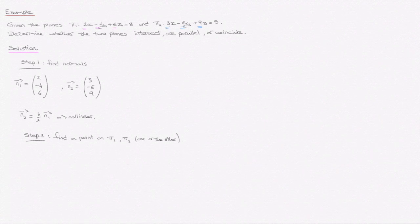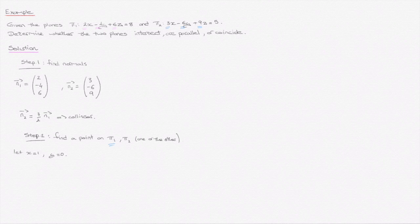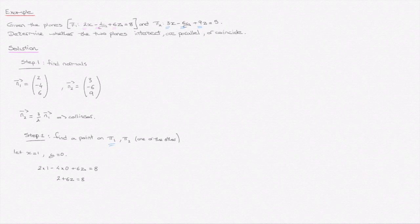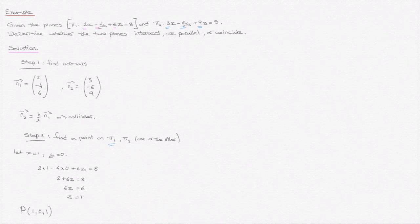We'll select plane 1. To find a point on this plane, let x equal 1 and y equal 0. Plugging these into the equation of plane 1: 2(1) minus 4(0) plus 6z equals 8, which gives 2 plus 6z equals 8, then 6z equals 6, so z equals 1. Therefore, point P with coordinates (1, 0, 1) is contained in plane pi1.